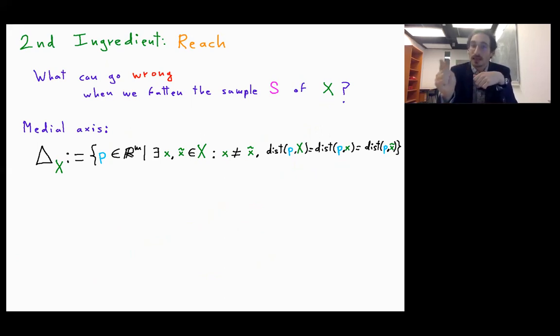X and X̃ such that the distance of P to the set capital X is equal to the distance to X and to the distance to X̃. In other words, and in a simpler way, this just means that my point P has more than one nearest point in X.